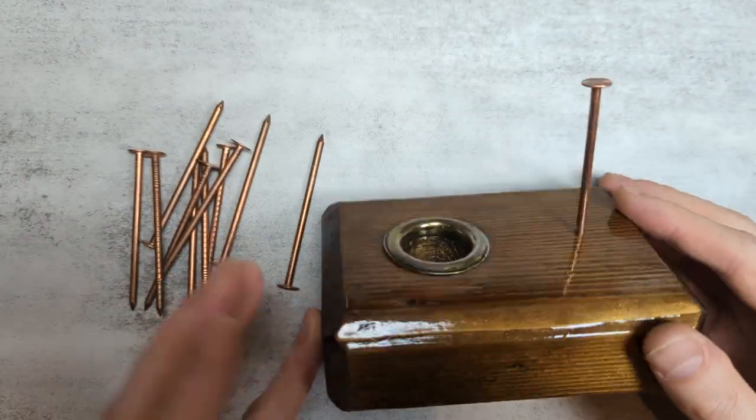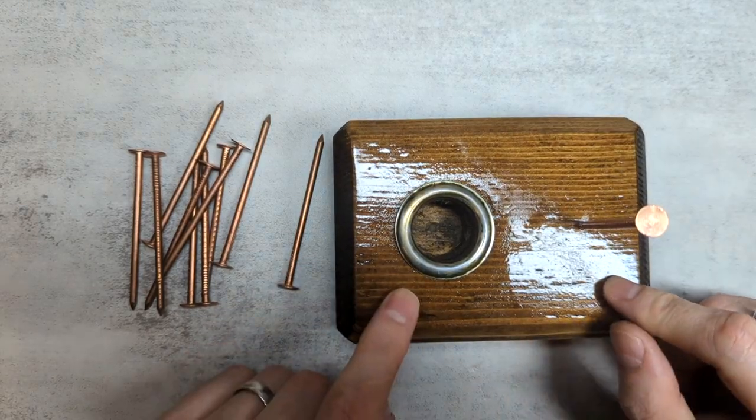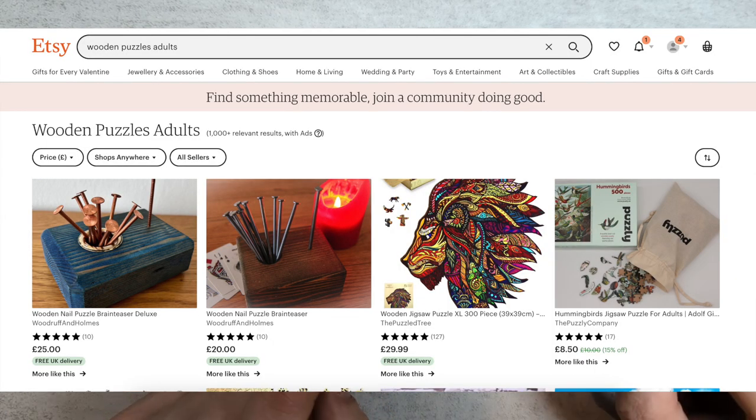Now you can easily make one of these yourself. You can bang a nail into a piece of wood or into a table or something like that. I got this one from an Etsy store called Woodruff and Holmes. I'll put the link in the description below.